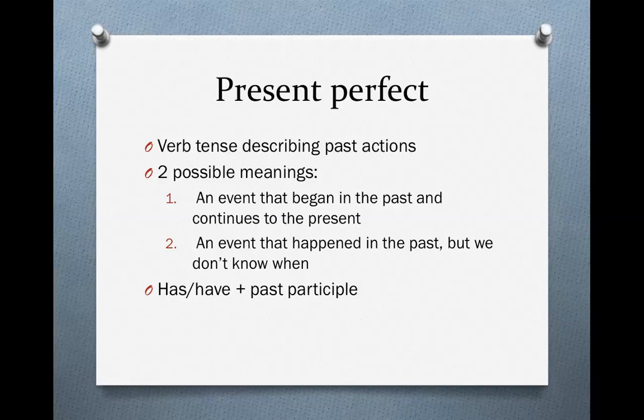One, it could describe an event that started in the past and is still happening now. It hasn't finished yet. The present perfect can also describe an event that happened in the past and it's finished, but we simply don't know when it happened in the past.